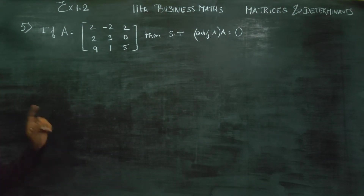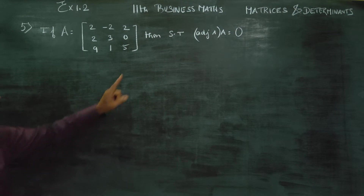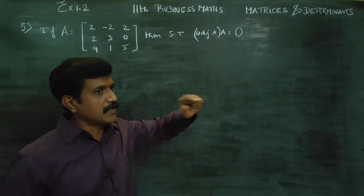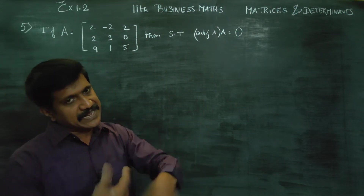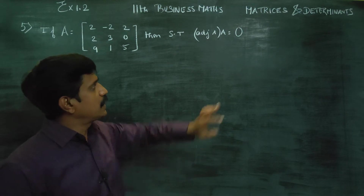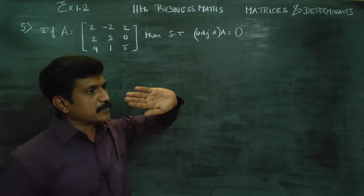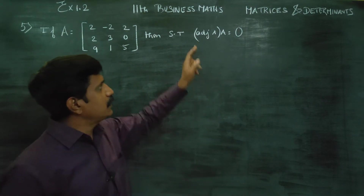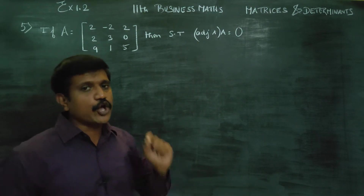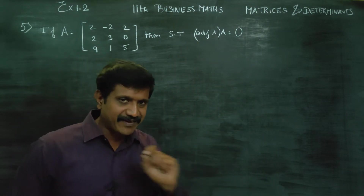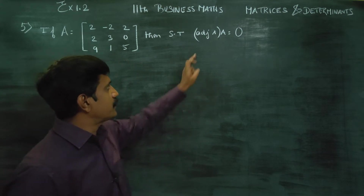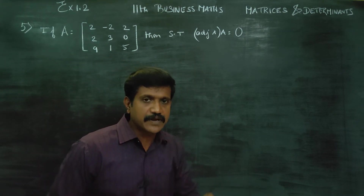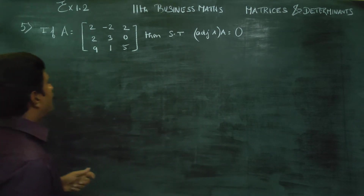To find adjoint A, we have the cofactor matrix. Adjoint A is the transpose of the cofactor matrix. If you have the cofactor matrix, you can find the adjoint matrix. To find the adjoint matrix, first we have to find the cofactor matrix.